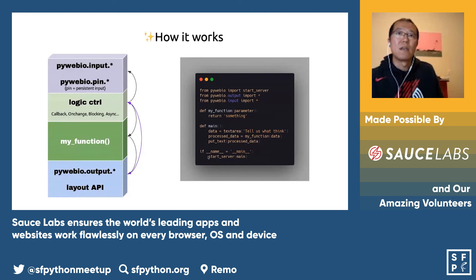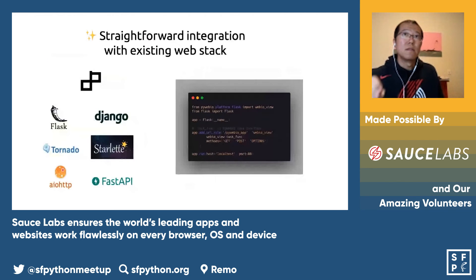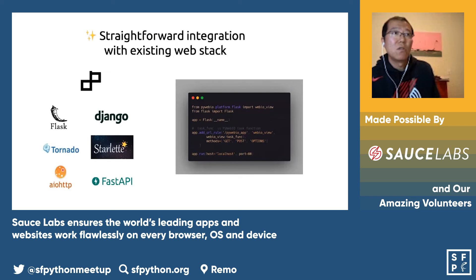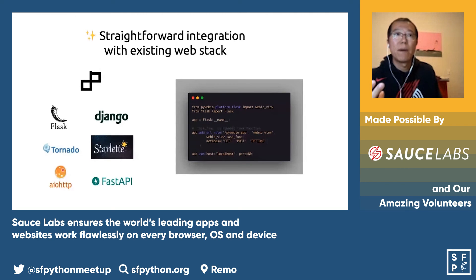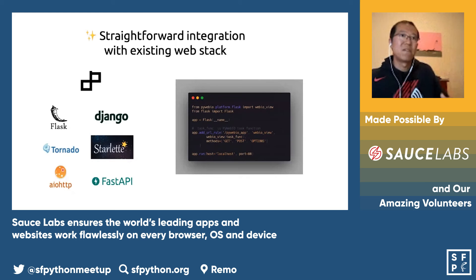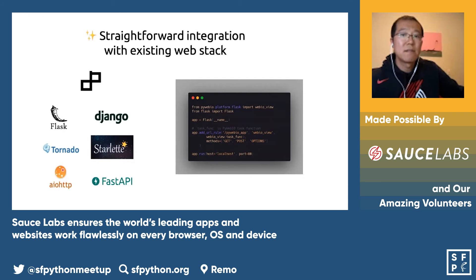We don't want to reinvent the wheel, so PyWebIO can be easily integrated with your existing web stack. For example, if you already built a web application using Django, or your company already has an application using Flask, it's easy — you can use PyWebIO to write one or many pages, and then use custom APIs to integrate with your existing web application. So far, we haven't seen any other library with this kind of straightforward integration with existing web stacks.